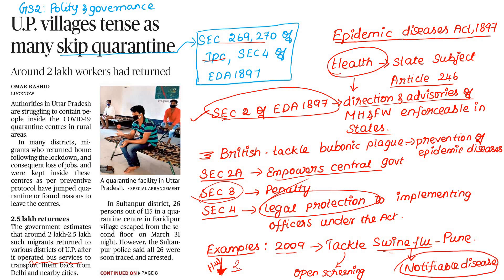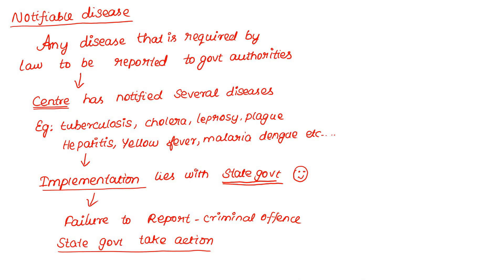So, what is a Notifiable Disease? Any disease that is required by law to be reported to government authorities is a Notifiable Disease. If required by law, you must report to government authorities.